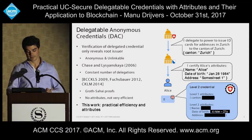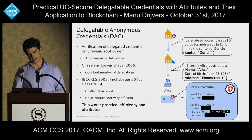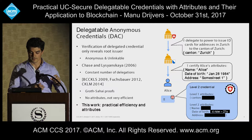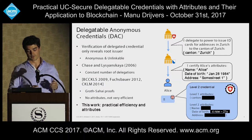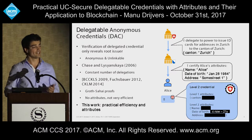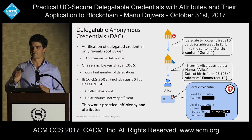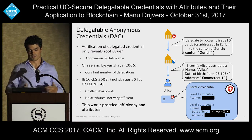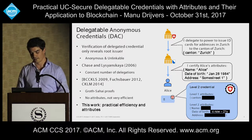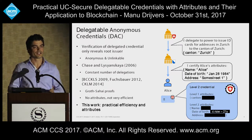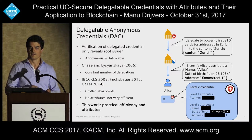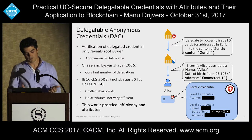Delegatable anonymous credentials were introduced in 2006 by Chase and Lisiansky, and they had a construction already. It was limited in the sense that you can only have a constant or fixed number of delegations because the credential size would blow up exponentially in the delegation depth. But later work by Belenkiy et al., Fuchsbauer, and Chase et al. solved that problem such that you can have a long chain of issuers while still being polynomial. However, these schemes are not very efficient, and more importantly, they don't support attributes — you can have a credential or not have a credential, but you cannot encode more information or selectively disclose attributes. That's what we're going to add today.